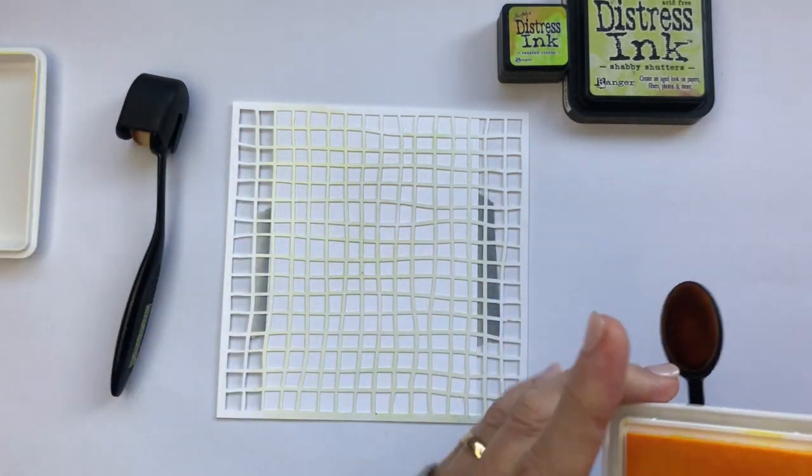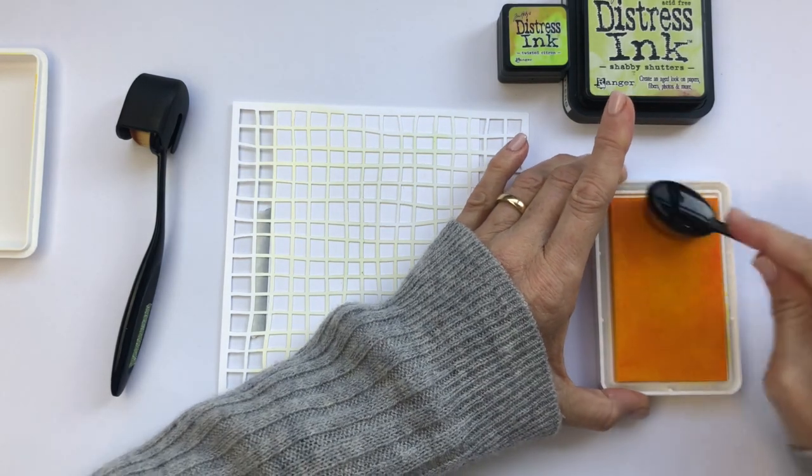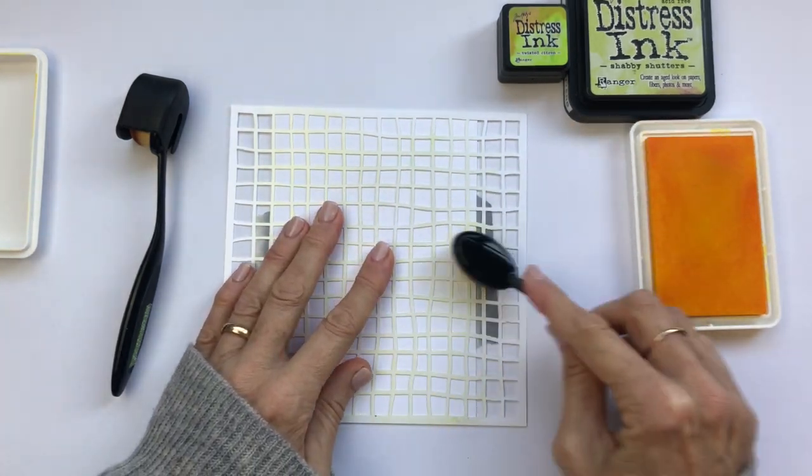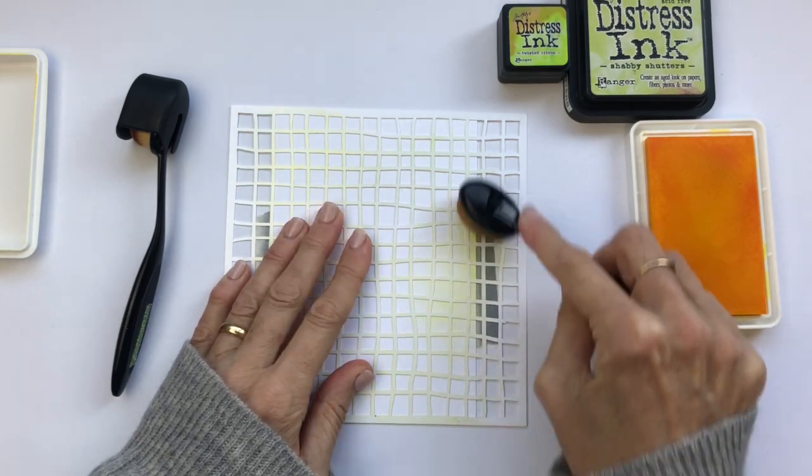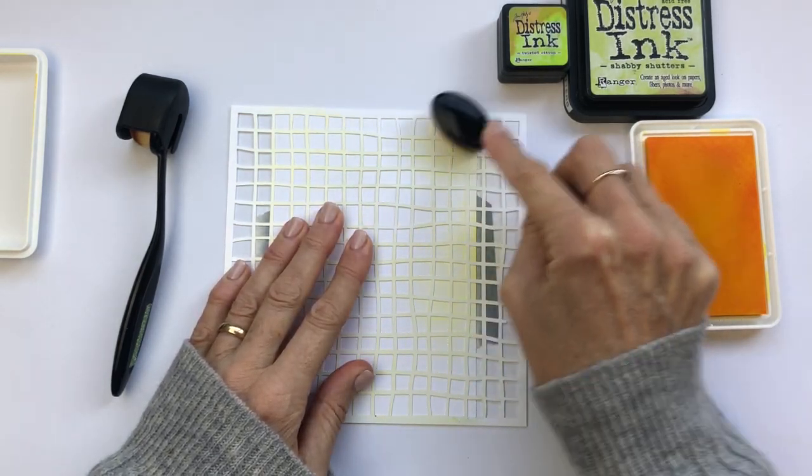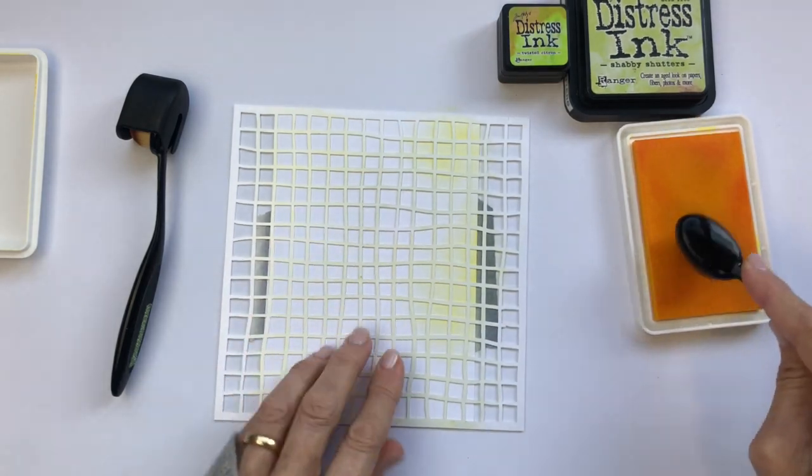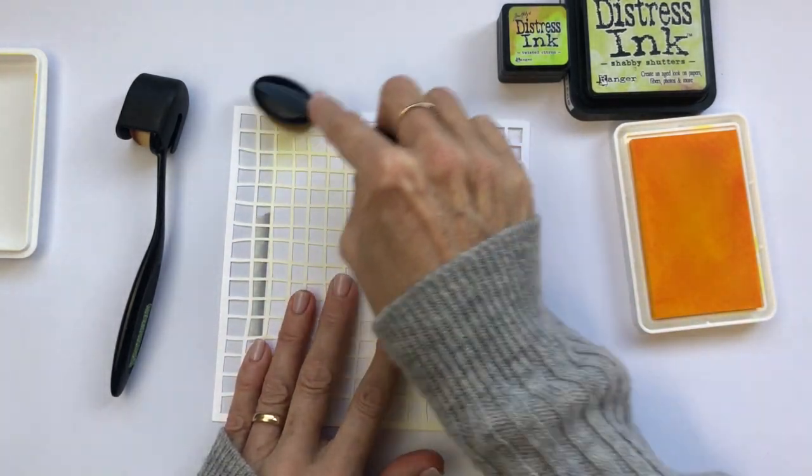To begin with we're taping the fishnet stencil from Paper Rose Studio to a piece of white cardstock and blending through that in some yellow and green inks. These colors are going to be mirrored in the coloring of the stamp a little bit later.